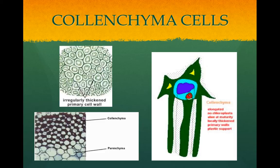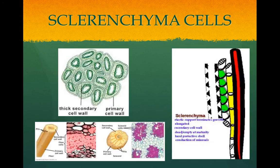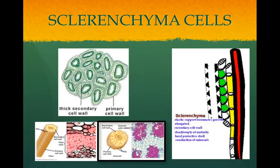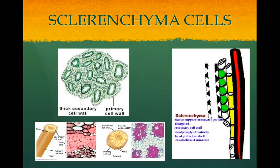Sclerenchyma cells have a hard secondary cell wall, and it is hardened with lignin. Sclerenchyma cells are usually found in areas that have stopped growing. They are dead when mature, and they create support. There are two major types: fibers, which are long and slender in bundles — found in hemp and as the strings in celery — and sclereid cells, which are considered stone cells because they're short, irregular, and have very hard secondary cell walls. We find them in the coats of seeds and the shells of nuts, and the grit in a pear is due to the presence of sclereids.